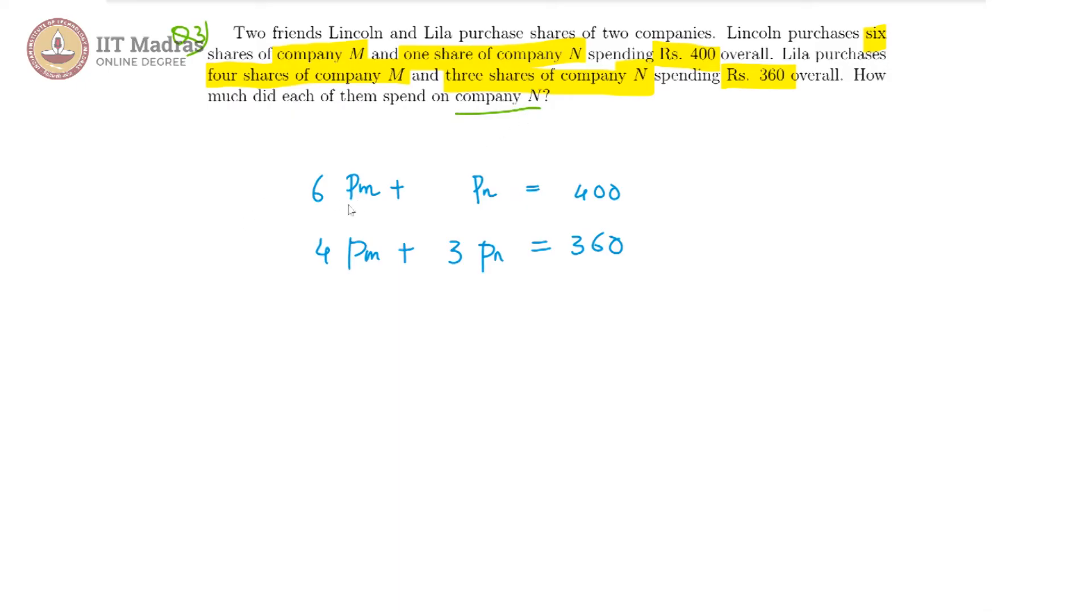So we can work towards eliminating the PM variable from these two equations. We can multiply this equation by 4 and this one by 6 because 4 into 6 is 24, 6 into 4 is 24, and that way we should be able to subtract 24 PM.